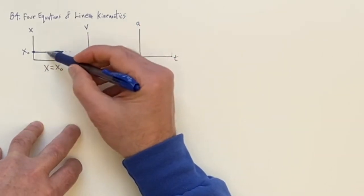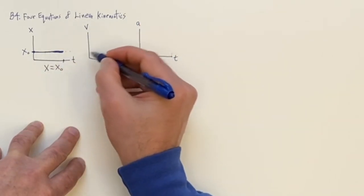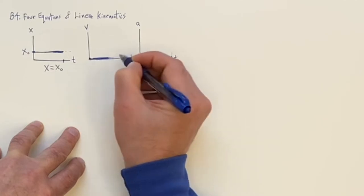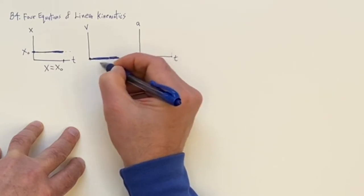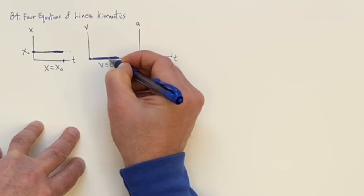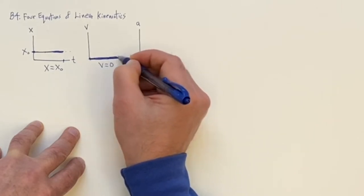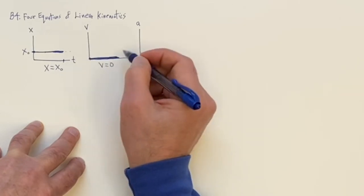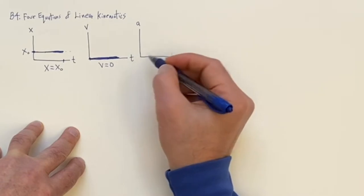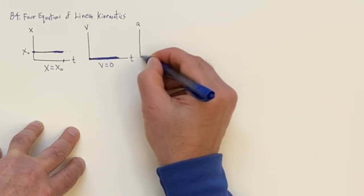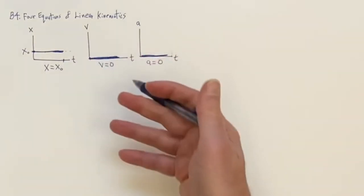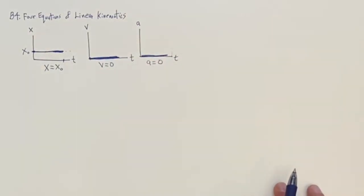The velocity is the slope of this graph, and we know from common sense that the car is not moving, so the car is going at zero velocity: V equals zero. The graph is a straight horizontal line down at V equals zero. And for the acceleration, since the car is not changing its velocity, likewise it's zero. So the equation is A equals zero. There are the three equations for the first case.